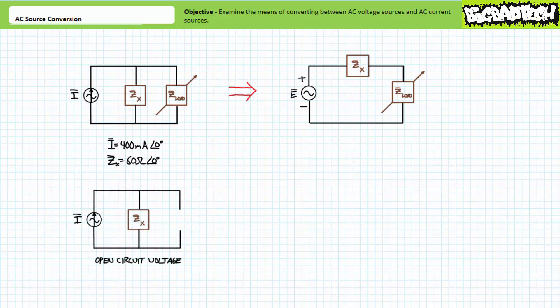To do so, first one must remove the variable load impedance to isolate the AC current source and the fixed parallel impedance. The value of the equivalent fixed series impedance, you'll be happy to know, is the value of the fixed parallel impedance — only the position changes. For the given circuit, this is an impedance of 60 ohms at an angle of zero degrees.